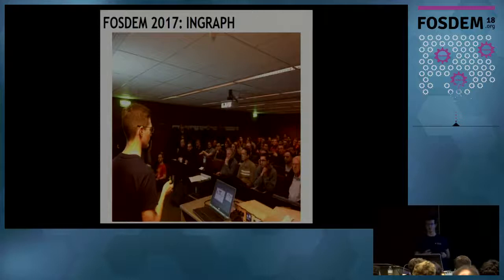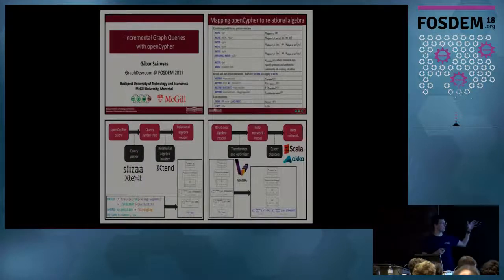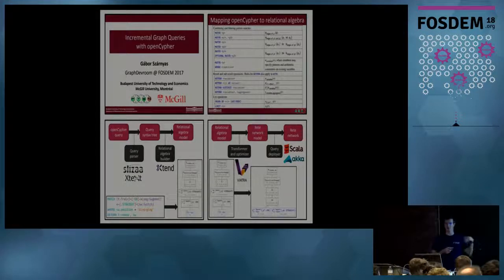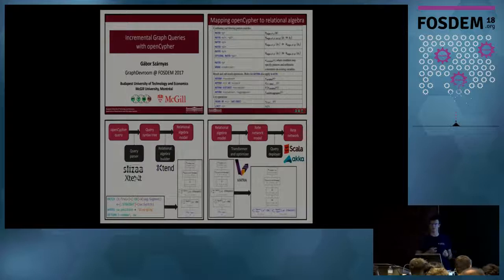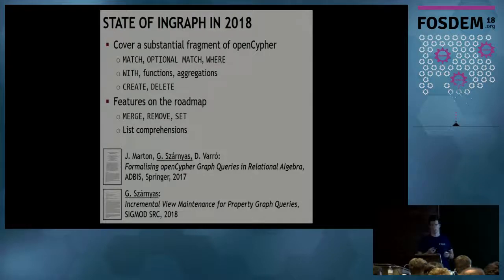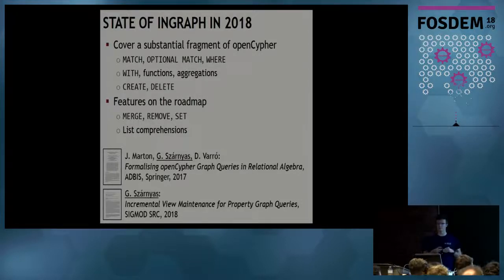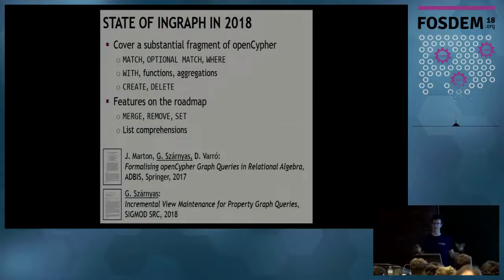Last year I gave a talk in this same room about InGraph. The way InGraph works is to first compile OpenCypher queries to relational algebra, then transform that to an incrementally maintainable representation, then use an incremental relational engine to calculate results. In the last year we expanded InGraph with many new features: it now covers a substantial fragment of OpenCypher including subqueries, functions, aggregations, and some data manipulation operations like create or delete.